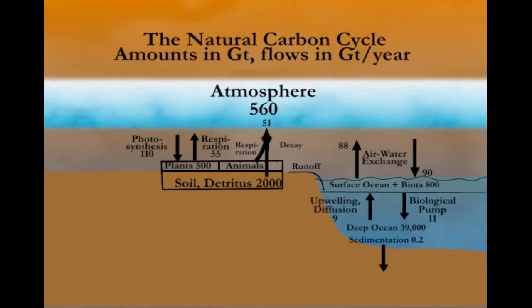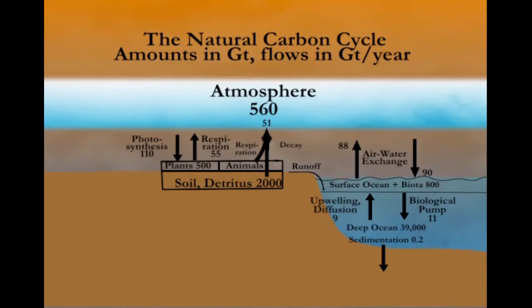There are two other processes — upwelling and diffusion — that bring up deep waters and return some carbon to the surface, almost as much as the biological pump sends down. So the net removal is only about two gigatons of carbon to the deep ocean per year. On timescales of hundreds to hundreds of thousands of years, that carbon is effectively lost. In fact, a recent study suggests that some small fraction of carbon we put in the atmosphere may remain for timescales up to 30 or 35,000 years.